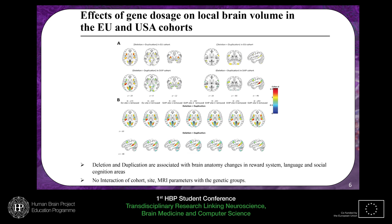Now the results about local brain volume differences. On panel A you see the differences where the deletion presents a higher volume than the duplication, with controls as a baseline in the middle. The other side shows the inverse. The main message is that through these effect size maps computed from Cohen's d maps, we show that the effect size is global and very similar across the two cohorts. When we do a leave-one-out analysis — each time removing one site from the analysis — we get exactly the same effect sizes throughout all results.